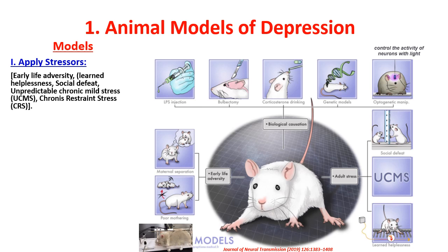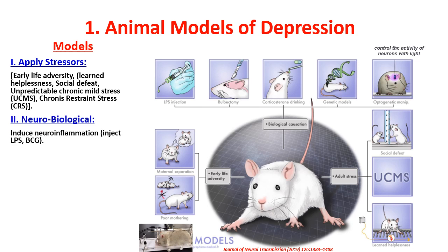Multiple stressors are applied on a schedule that is unpredictable, such as food deprivation, water deprivation, noise exposure at a certain wave, stroboscopic light, cold restraint, etc. Different stressors each day for about six weeks. There is also chronic restraint stress where the animal is placed in a restrainer for three to four hours daily for six weeks — this also induces depression. All of these are 'apply stressors' models.